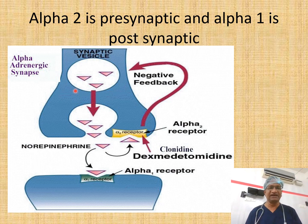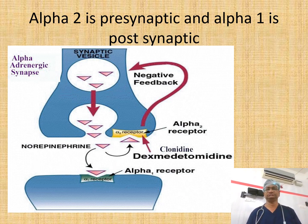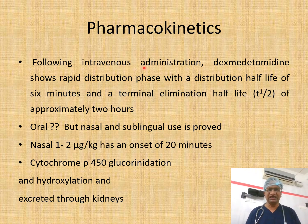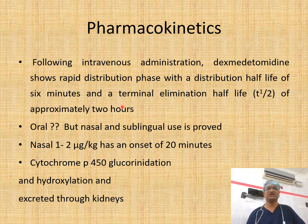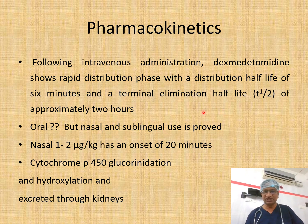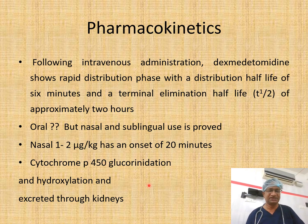Alpha-2 is pre-synaptic and alpha-1 is post-synaptic, so we may get a negative feedback on this. Following intravenous administration, dexmedetomidine shows a rapid distribution phase with a distribution half-life of 6 minutes and a terminal elimination half-life of approximately 2 hours. Nasal and sublingual use is also proven — intranasal is 1 to 2 mcg/kg with onset of 20 minutes. It undergoes CYP450 conjugation, hydroxylation, and is excreted through the kidneys.